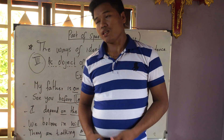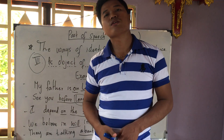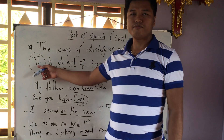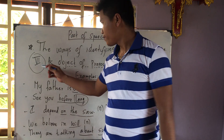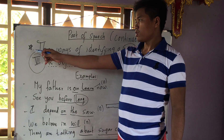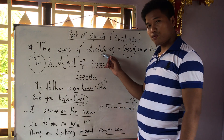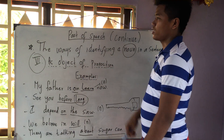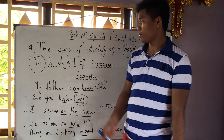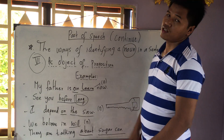Before the last speech, we have to start this. I write point 5, so today we start from point 6. In this lesson, you will get to know the ways of identifying a noun.